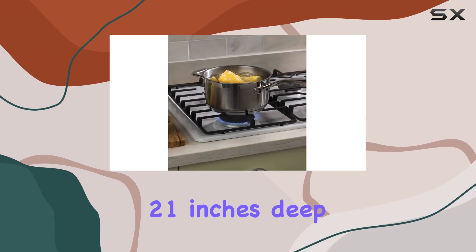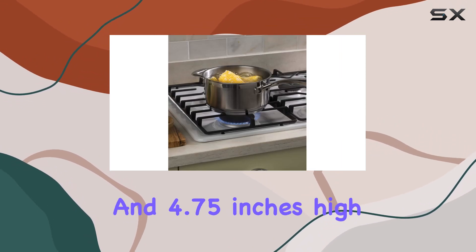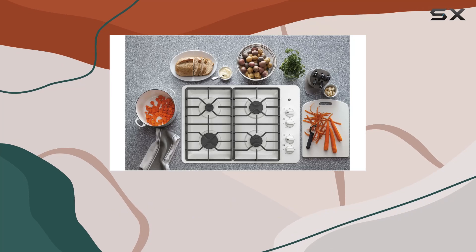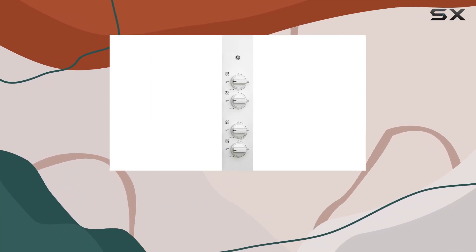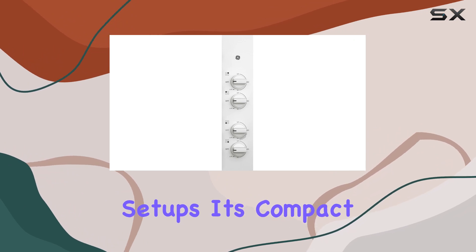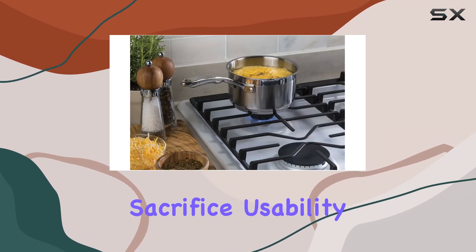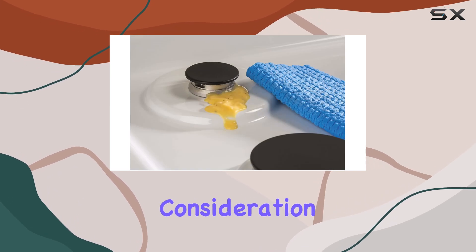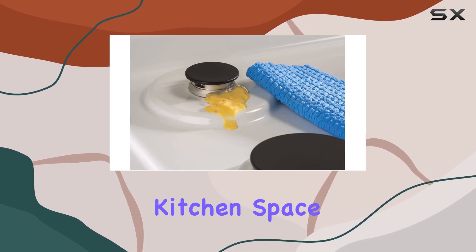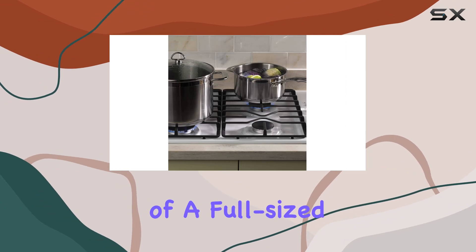With dimensions of 21 inches deep, 30 inches wide, and 4.75 inches high, the GE JGP 3030 DLWW fits neatly into standard kitchen counter setups. Its compact design doesn't sacrifice usability and provides ample cooking space. This is an important consideration for those who have limited kitchen space but require the functionality of a full-sized cooktop.